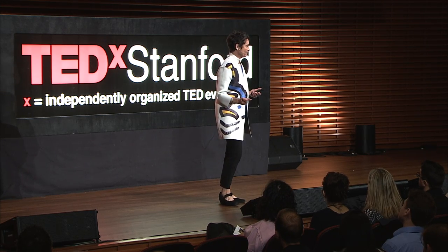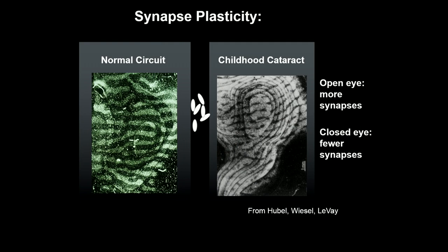Hubel and Wiesel were very interested in understanding congenital cataracts in children. When children are born with a congenital cataract and are blind in that eye, if the cataract is not removed promptly, they will never see through that eye. When they made an animal model by patching one eye and checking the inputs from the open eye to the visual cortex, amazingly they saw that the open eye had taken over almost all of the cortical circuitry for vision, leaving pitiful black holes for the closed eye. This shows that experience is required for wiring and tuning up brain circuits — a very vivid example of use it or lose it, and synapse plasticity in action.